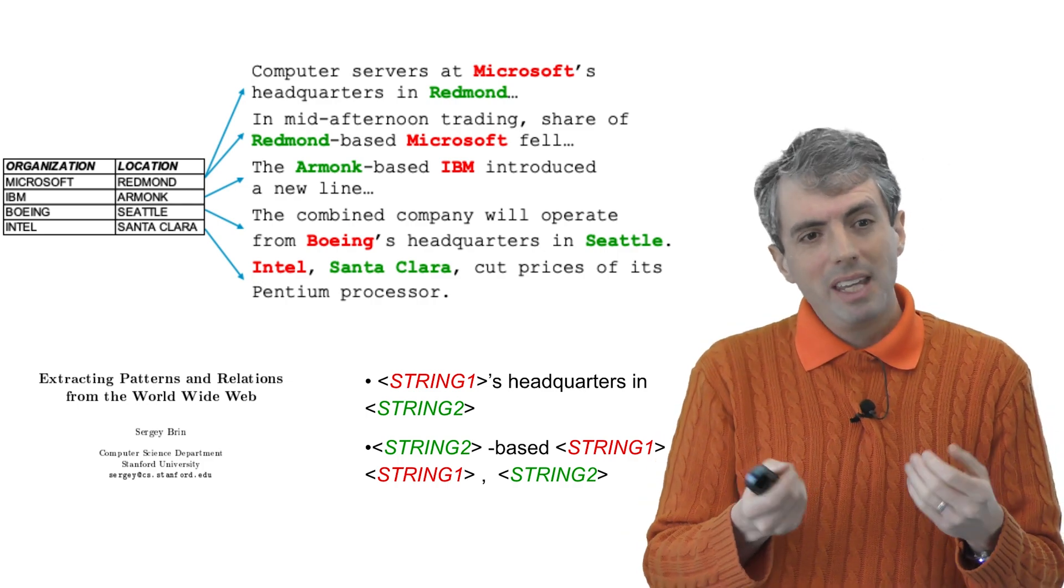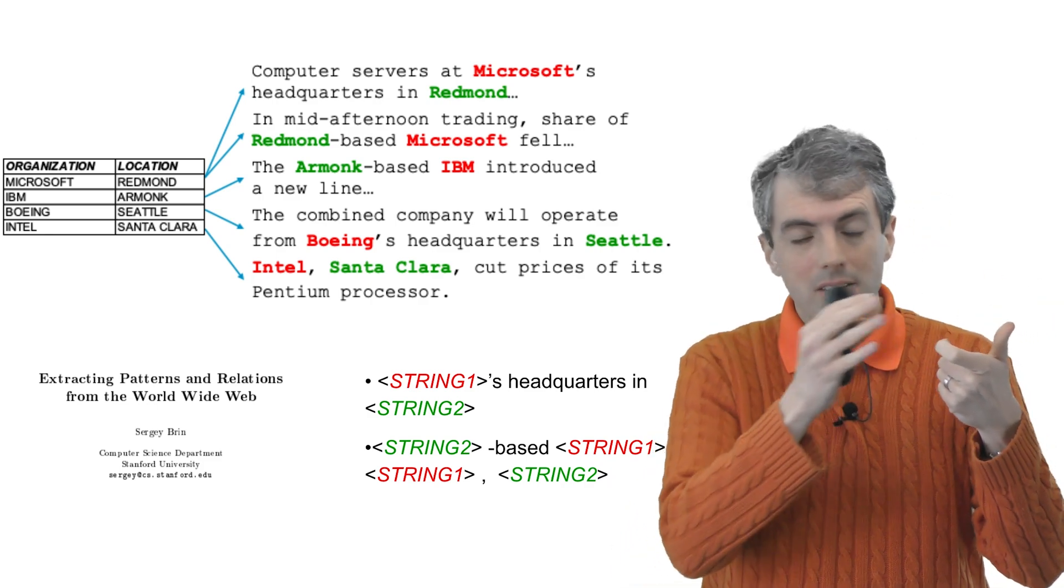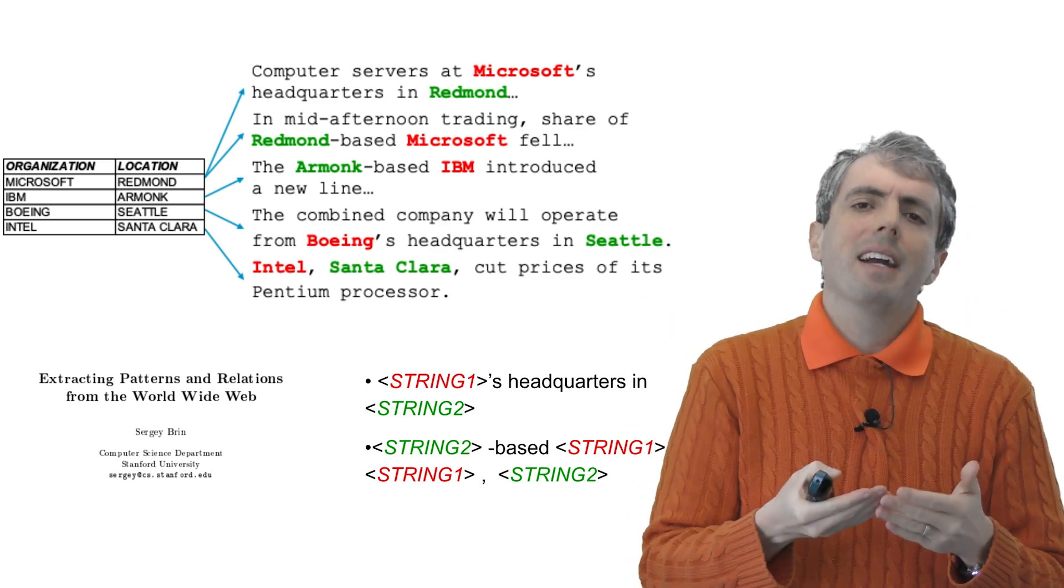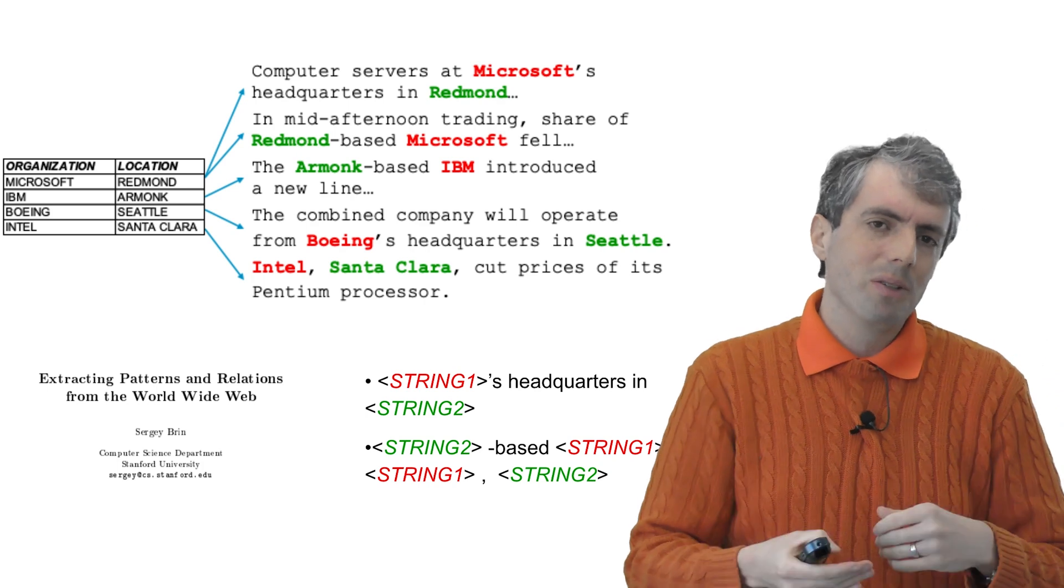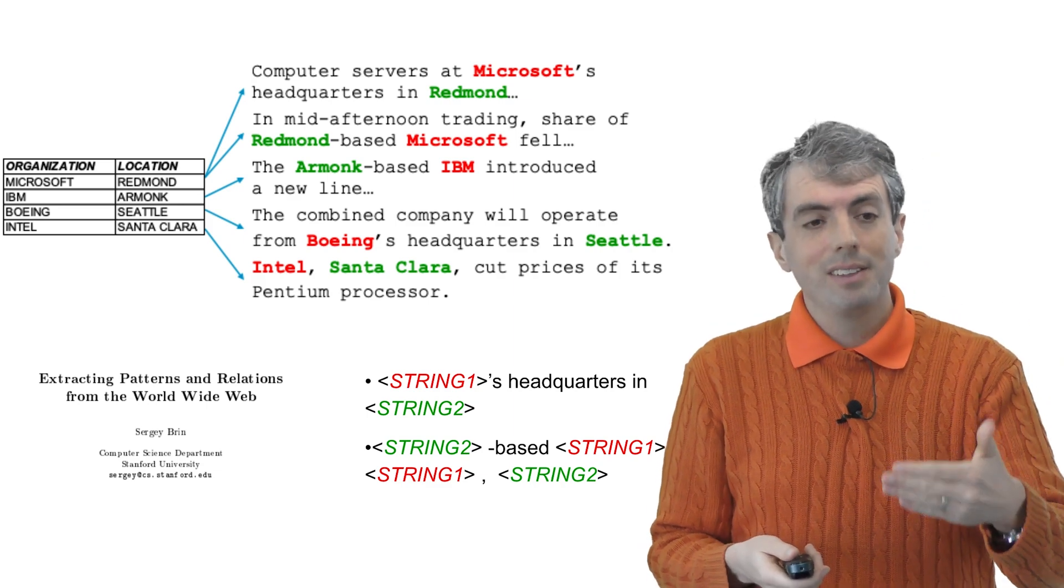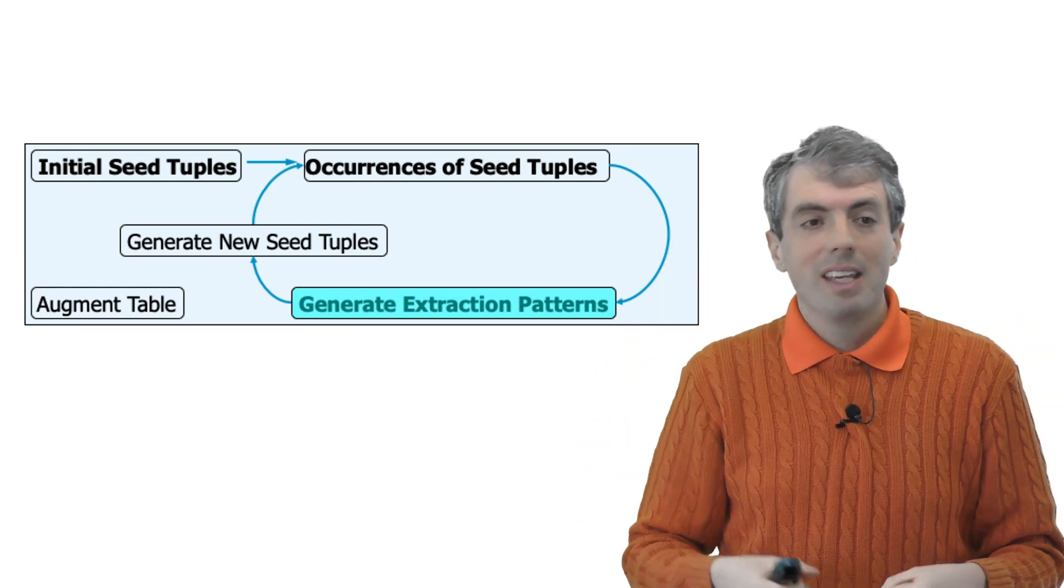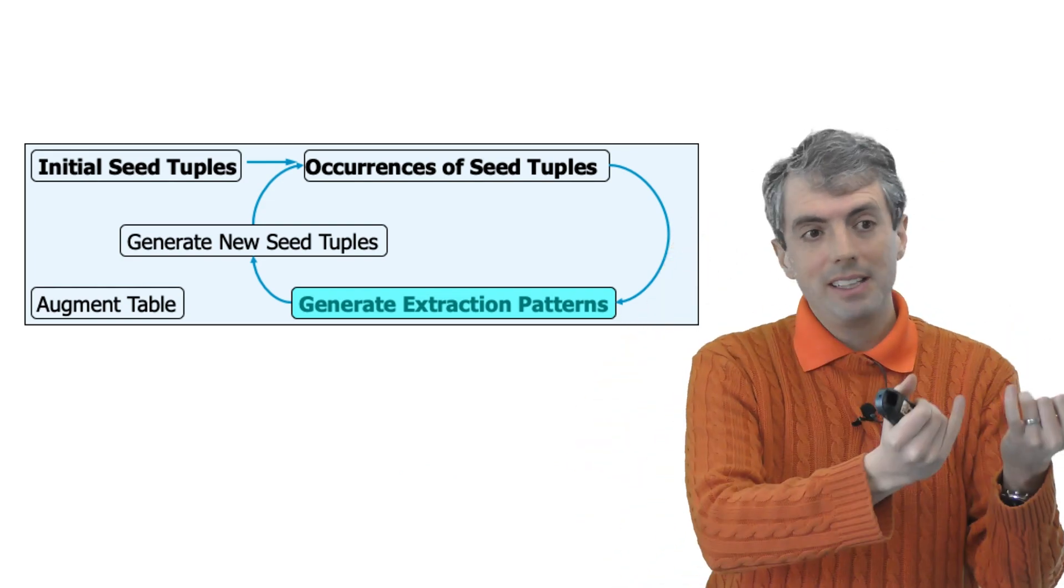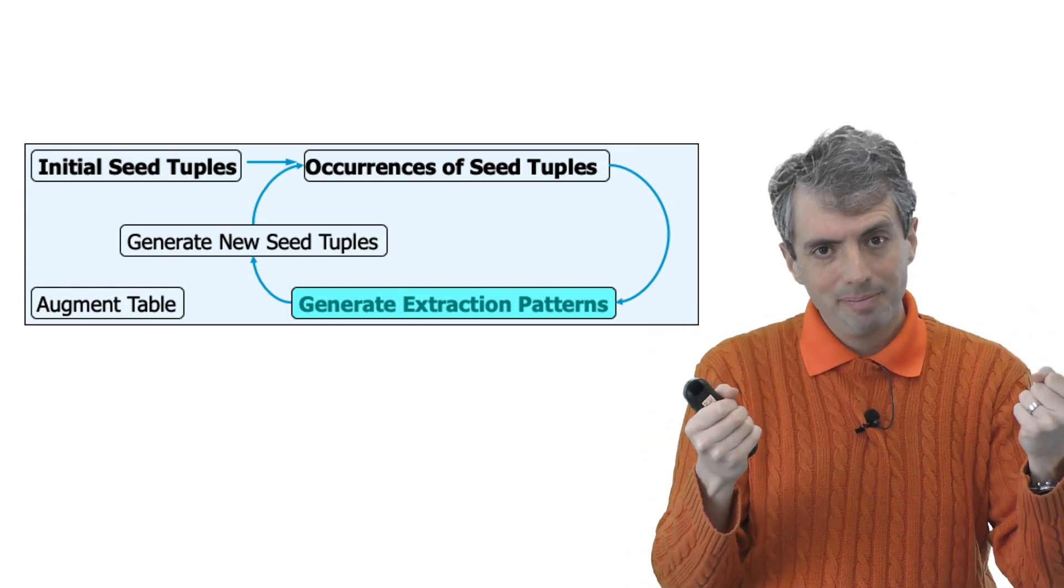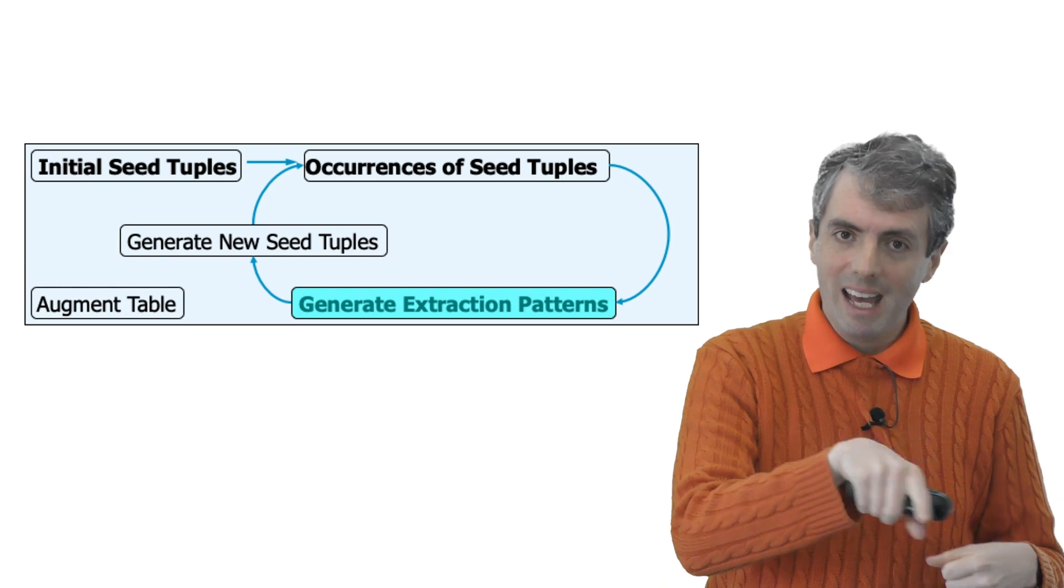So for example, if you get a bunch of entity pairs where you have entity one apostrophe as headquarters in entity two, that's a string of text that might allow you to infer that string two is the location of string one, where those are two entities. And you can do this in a cycle. You find pairs of entities, tuples, that appear together. You go out, search for text that connects those two things together. You create new templates, search for new entities in those templates, and repeat.